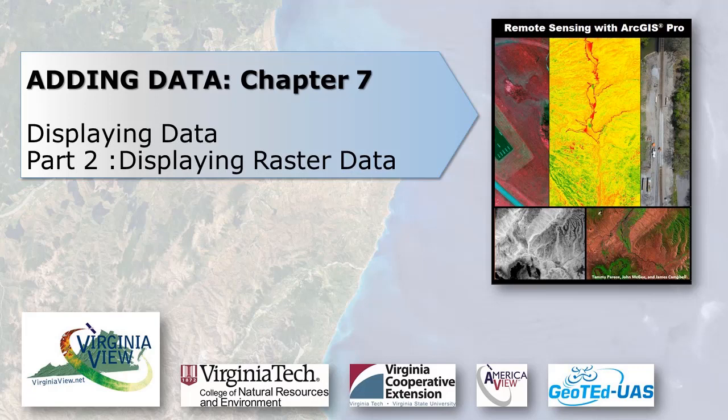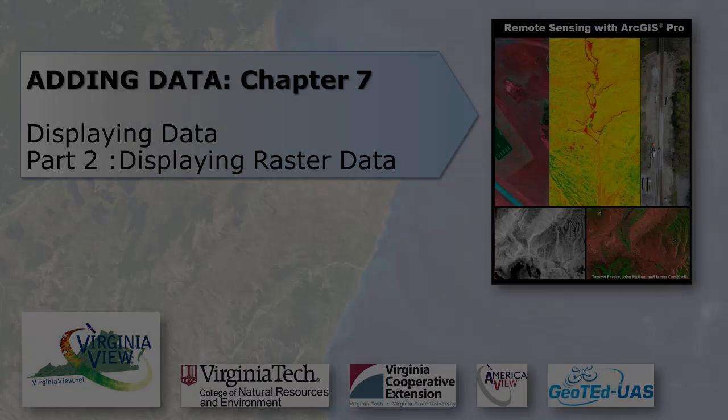This video was produced by VirginiaVue, a consortium dedicated to promoting remote sensing, outreach, education, and research through funding by the AmericaVue Consortium. This video was developed in partnership with the Virginia Geospatial Extension Program and Geoted UAS. Its contents are solely the responsibility of the authors and do not necessarily represent the official views of AmericaVue, the USGS, or other partners. The mention of trade names or commercial products does not constitute their endorsement.